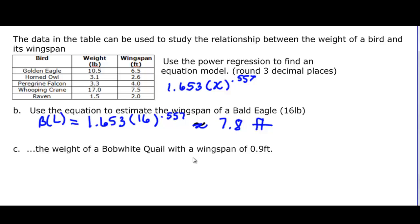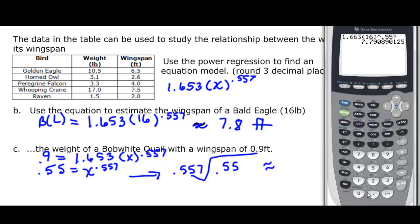Okay, now we want to use this equation to estimate the weight of a bobwhite quail with a wingspan of 0.9 feet. That's the Y, or the B of L, so now we say 0.9 is equal to this 1.653 times X to that decimal. And again, we're going to divide it off, and when you take that 1.653 and divide it into the 0.9, we actually end up with 0.55. If it's going to be equal to X to the 0.557. And again, we're going to take, and I'm just going to write it as 0.557, and then we'll take the root. So it is the 0.557 root of 0.55. I've rounded, but that's approximately what it is. And if we look at that, we have a wingspan of 9 feet gives us a weight of a bird that's approximately 0.34 pounds.